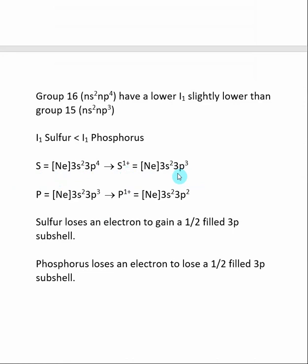Phosphorus, on the other hand, starts out with a half-filled subshell in its neutral state. So when it loses an electron to become phosphorus plus, the electron configuration becomes 3P2.